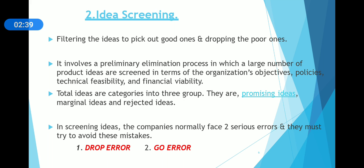Then comes idea screening — filtering the ideas to pick out good ones and drop the poor ones. It involves a primary elimination process in which a large number of product ideas are evaluated in terms of the organization's objectives, policies, technical feasibility, and financial viability. Total ideas are categorized into three groups: promising ideas, marginal ideas, and rejected ideas.